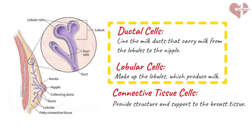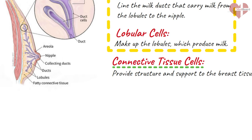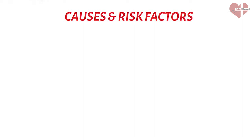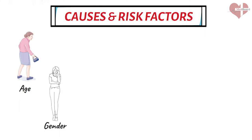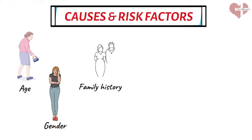In some cases, breast cancer can also occur in the connective tissue cells, but this is much less common. The exact cause of breast cancer is not fully understood, but several risk factors have been identified. These include: Age — the risk of breast cancer increases as a person gets older, and most breast cancer cases are diagnosed in women over the age of 50. Gender — breast cancer is much more common in women than in men. Family history — women with a family history of breast cancer, particularly those with a mother,